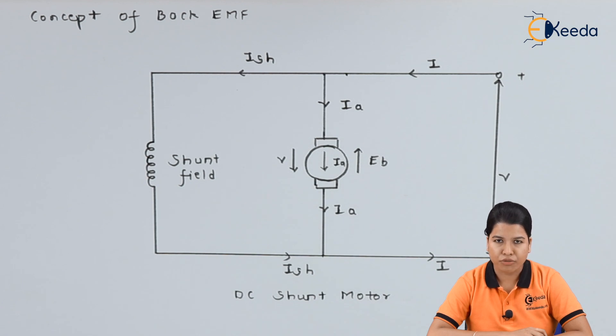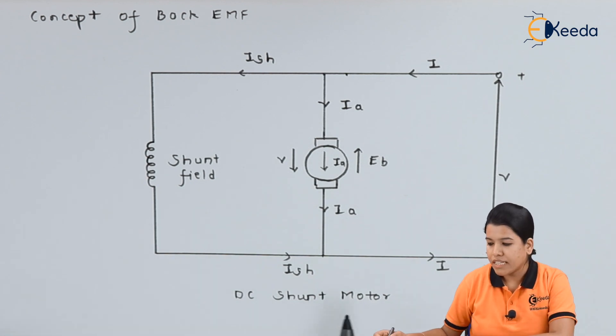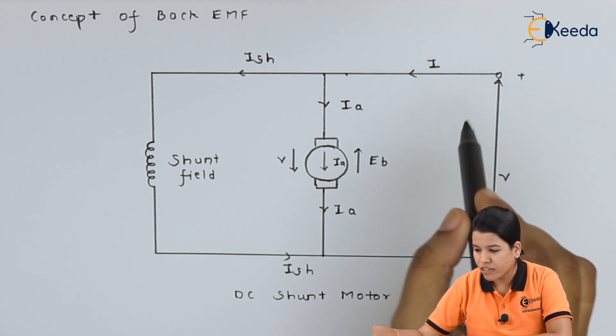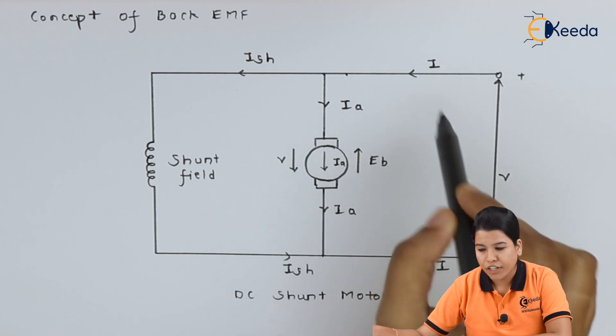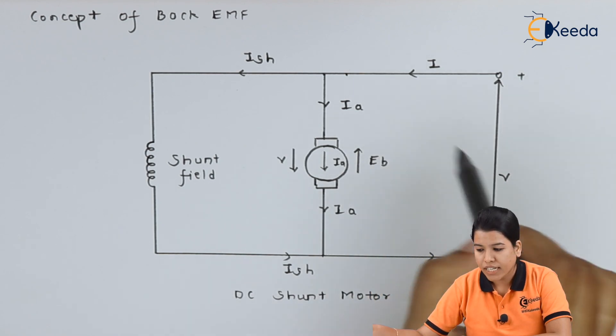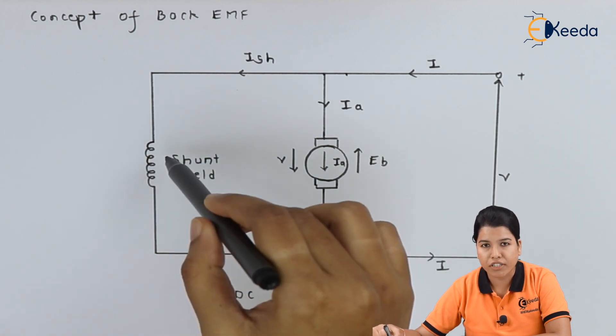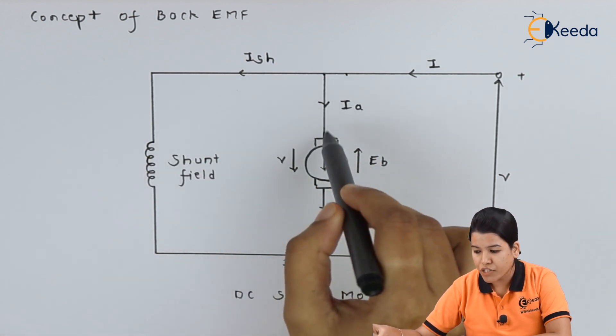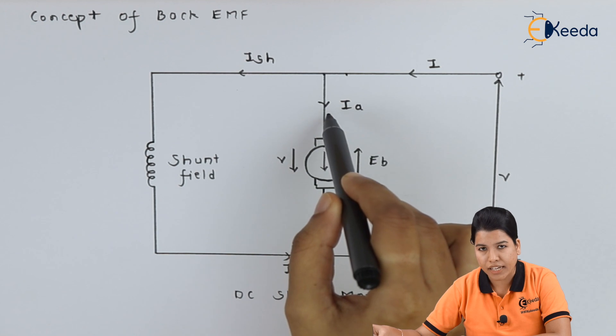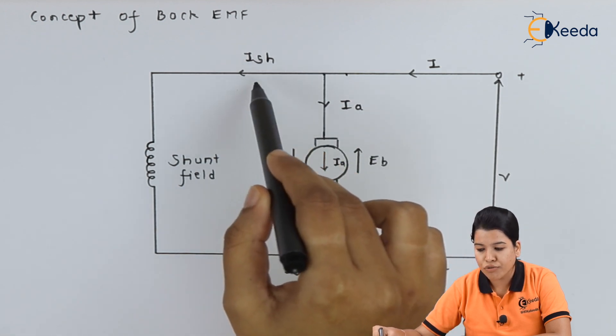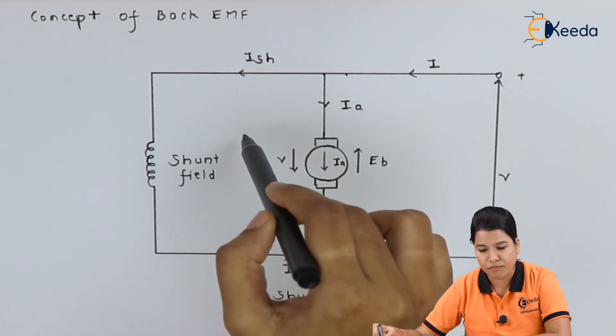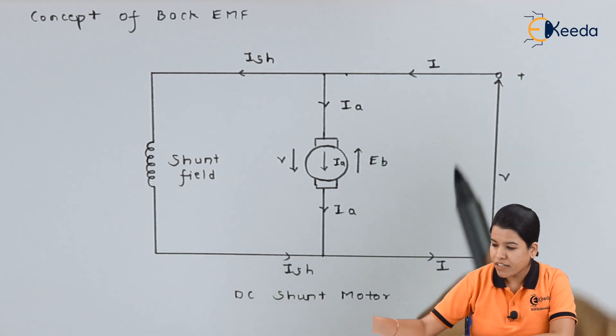This figure shows the electrical circuit for DC shunt motor. Here the total current I due to the supply voltage V gets divided across the armature and across the shunt field. Let current which flows through the armature be Ia and the current which flows through the shunt field be Ish.